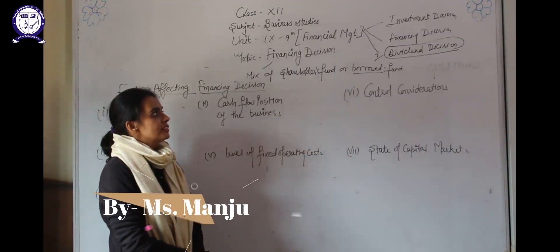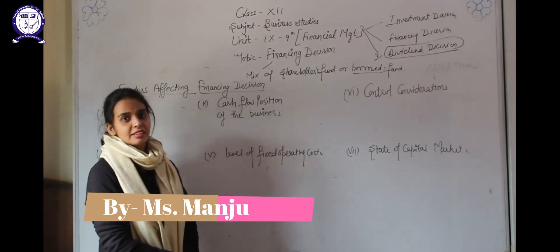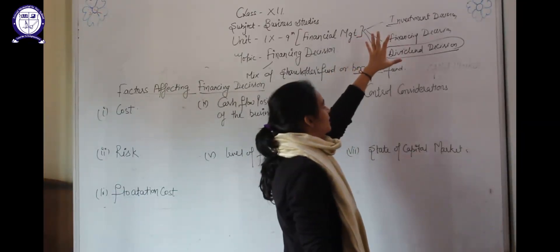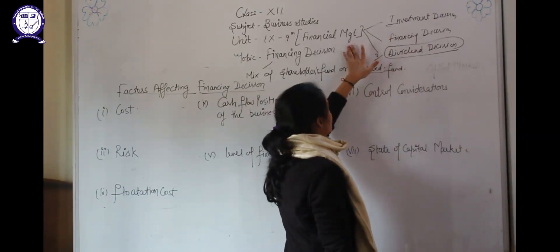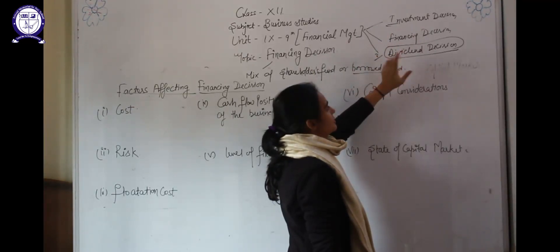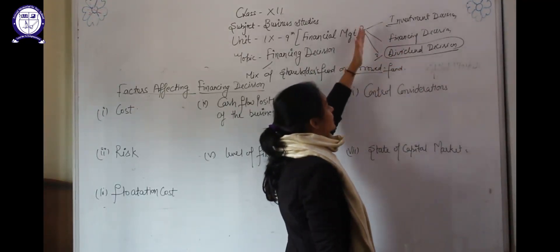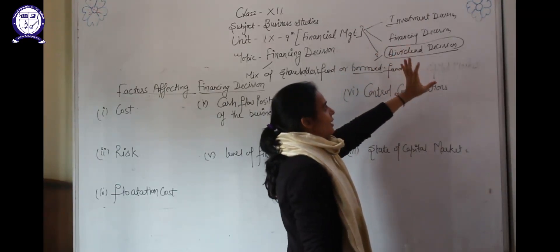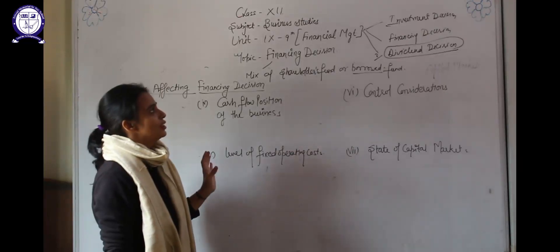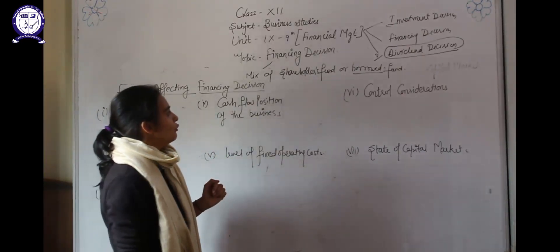Hello students, in this video we will study about the financing decision. As you already know, there are three types of main financial decisions taken by a financial manager: investment decision, financing decision, and dividend decision. These three main decisions affect the completion of the prime objective of any organization, which is wealth maximization.